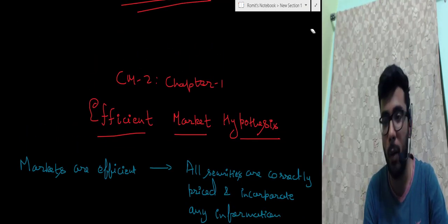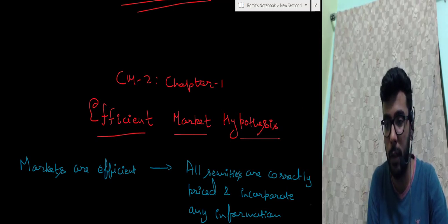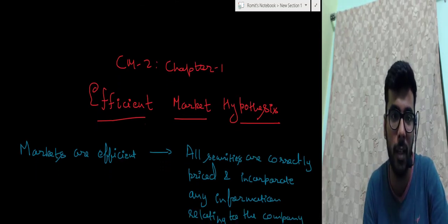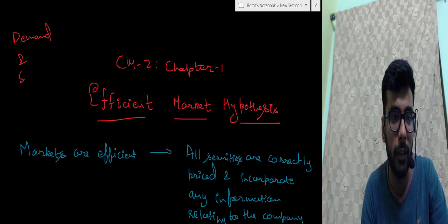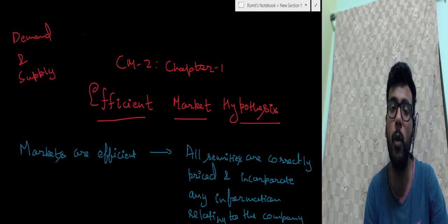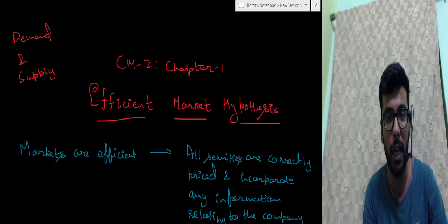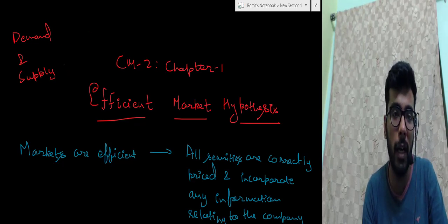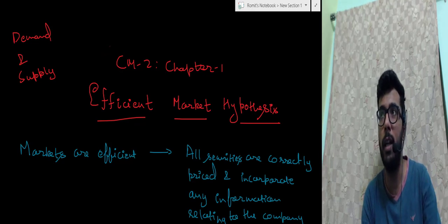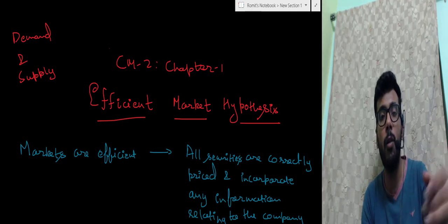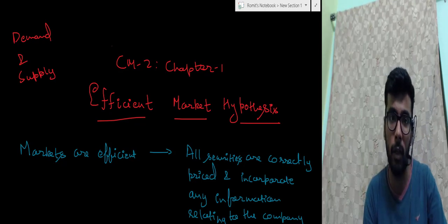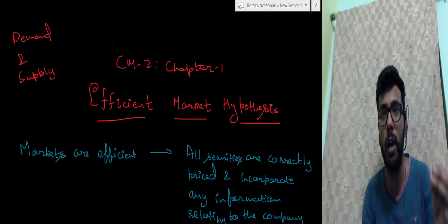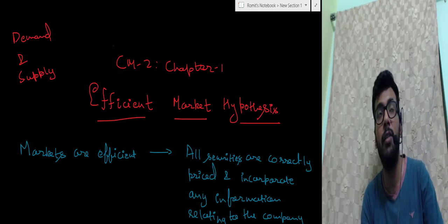How is any security priced in a market? When I talk about a financial security such as a share, how is it priced? It is priced based on demand and supply. These demand and supply are based on how investors demand or supply a particular share — at a given price, whether an investor is willing to buy or sell. It is all about investor sentiments.